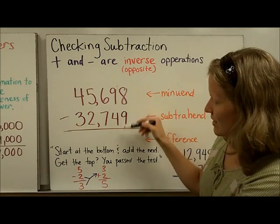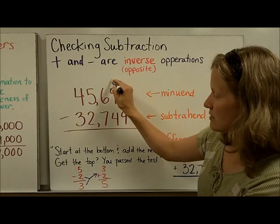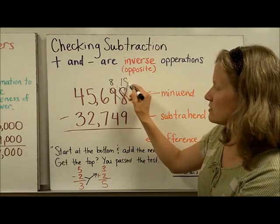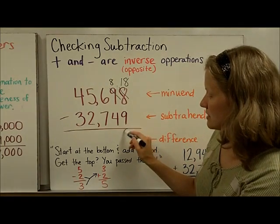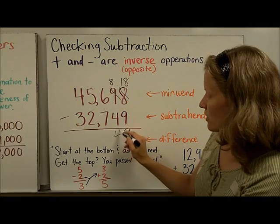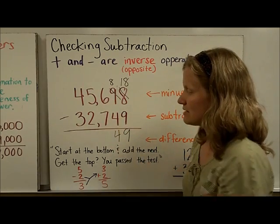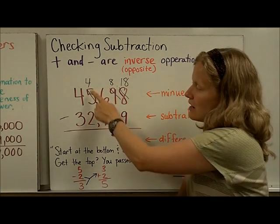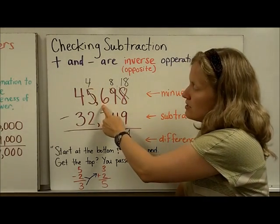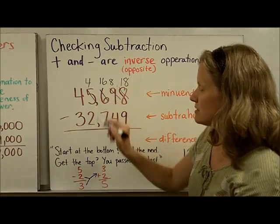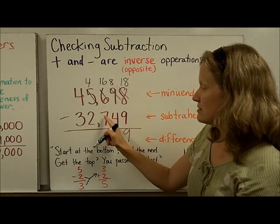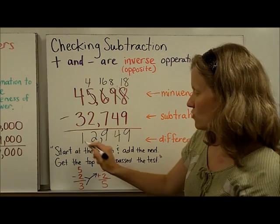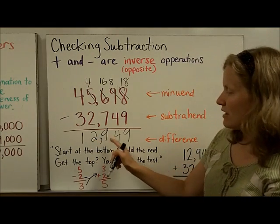I can't do eight minus nine. So I have to borrow from the tens. I'm going to take one ten away, chop it into ten equal pieces, and I'm going to add that over here. So I'll have eighteen ones. Eighteen minus nine is nine. Eight minus four is four. I can't do six minus seven, so I'm going to borrow from the thousands column. I'm going to take one thousand away, chop it into ten hundreds, and add that here to the six hundreds that are already there. So this becomes a sixteen. Sixteen minus seven is nine. Four minus two is two. Four minus three is one. So I got twelve thousand nine hundred forty nine.